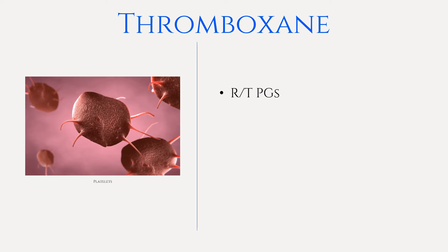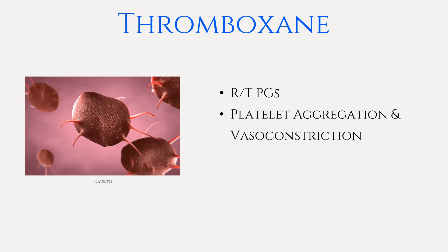The next eicosanoid inflammatory mediator is thromboxane, which is related to prostaglandins, abbreviated PGs. Thromboxane and prostaglandin are also known as prostanoids. Thromboxane encourages platelet aggregation and causes blood clotting and vasoconstriction, which manifests as the pallor or paleness before the onset of vasodilation and erythema caused by other inflammatory mediators. The antiplatelet action of aspirin works by inhibiting the enzyme that synthesizes thromboxane precursors.